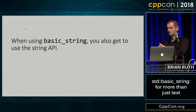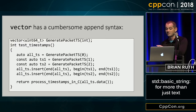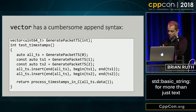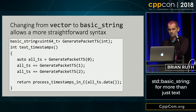Another cool thing is when you use basic string, you also get to use the string API. One thing I've done is generate timestamps based on a packet index, then aggregate those timestamps and pass them to a C API. Vector has a very cumbersome append syntax — I couldn't find a way without a named temporary to append to a vector. Changing a vector to a string allows more straightforward syntax. You can use plus-equals, call .data(), and it performs just as well as vector.